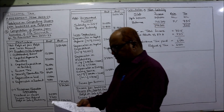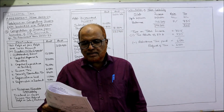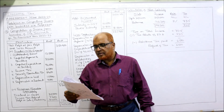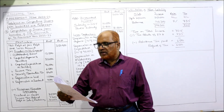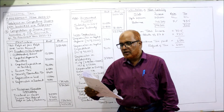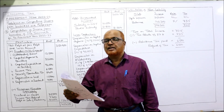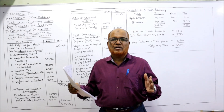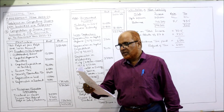Now problem number three. Sri Sainath commenced a business unit in a backward region declared by the Government of India. The following is the summarized profit and loss account for the year ending 31st March 2022. Compute income from business and tax liability for the assessment year 2022-23. So we have to compute the income from business, total income, and tax liability.